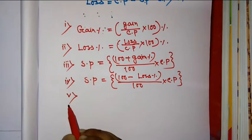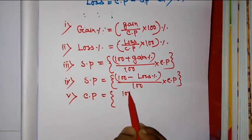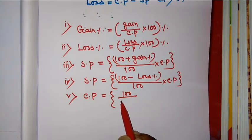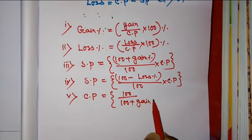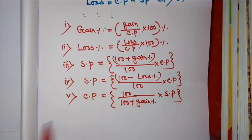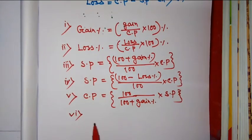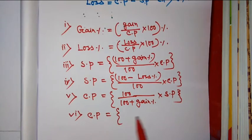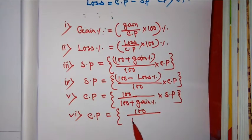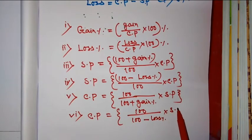Number five: find CP is equal to 100 divided by open bracket 100 plus gain percentage, close bracket, into SP. Number six: CP when there is loss — CP is equal to open bracket 100 divided by 100 minus loss percentage, close bracket, into selling price.